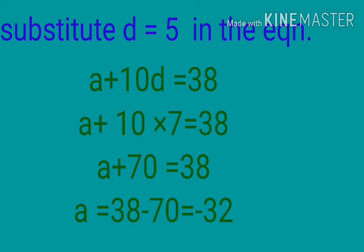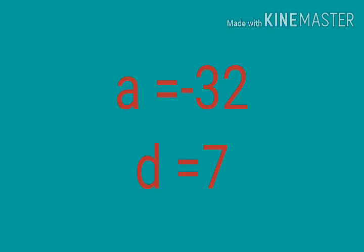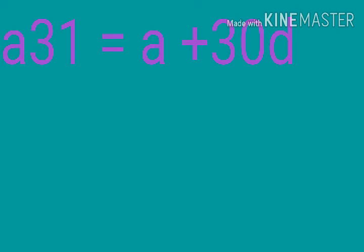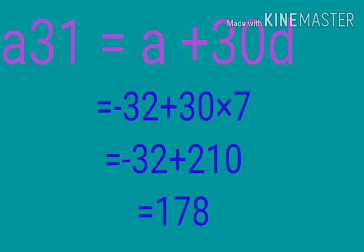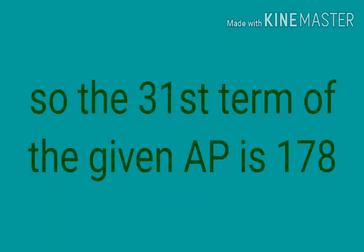Substituting D equal 7 into equation 1: A plus 10D equal 38, so A plus 70 equal 38, giving A equal 38 minus 70 equal negative 32. Now A equal negative 32 and D equal 7. We need to find the 31st term: A31 equal A plus 30D equal negative 32 plus 30 into 7. Negative 32 plus 210 equal 178. So the 31st term is 178.